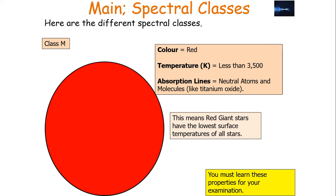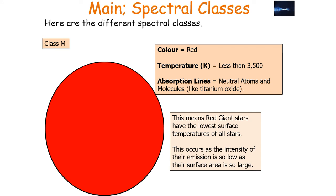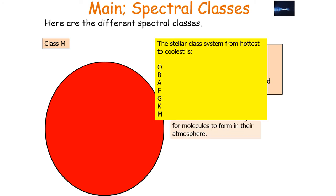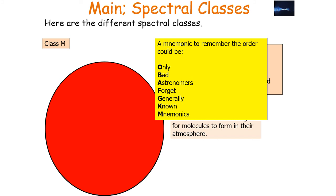Red giant stars actually have the lowest surface temperature of all stars — this occurs as their intensity of emission is so low because their surface area is so large. The stellar class system from hottest to coolest goes O, B, A, F, G, K, M. A mnemonic to remember the order could be 'Oh Be A Fine Girl Kiss Me', or 'Oh Be A Fine Guy Kiss Me', or 'Only Bad Astronomers Forget Generally Known Mnemonics'.